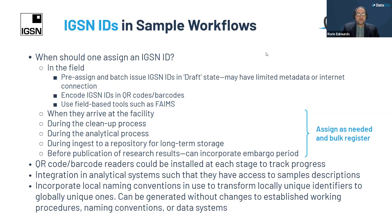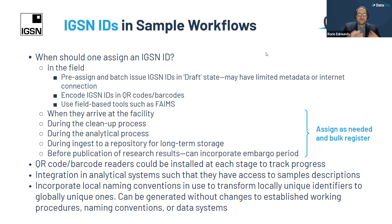You can use IGSN IDs everywhere in the sample workflow. In the field, you might pre-assign or batch-issue IGSN IDs in a draft state, especially when you have limited metadata or internet connection, using QR codes or barcodes and field-based tools such as FAIMS. Beyond that, you may want to use these QR codes and barcodes at each stage to track progress. You can integrate IGSN IDs into your analytical systems so they have access to sample descriptions, and incorporate your local naming conventions to transform locally unique identifiers into globally unique ones — so you don't necessarily have to change your established working procedures, naming conventions, or data systems.